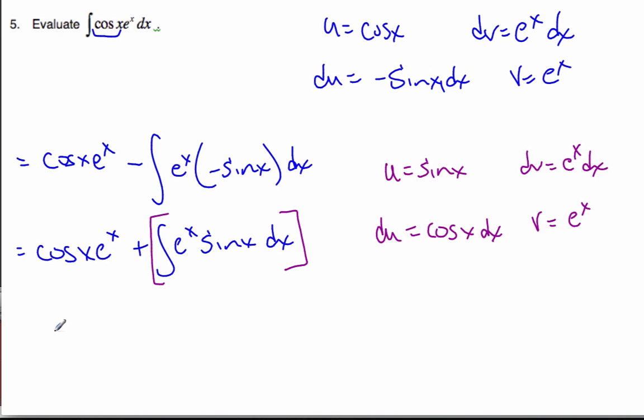So I know I have, I know that this integral here, my initial integral, cosine x e to the x dx, is equal to cosine x e to the x plus,